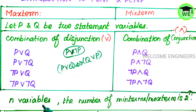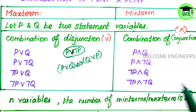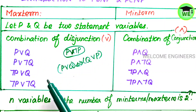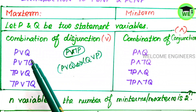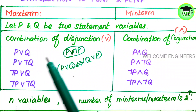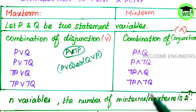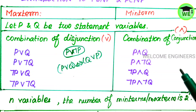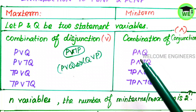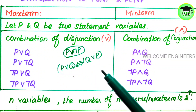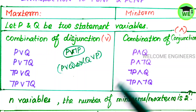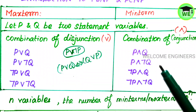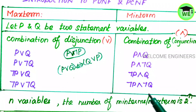For n variables, the number of min terms or the number of max terms is 2 to the power n. For 2 variables, the number of min terms or max terms is 2 power 2, which equals 4. For 3 variables, the number of min terms or max terms is 2 power 3, which equals 8.